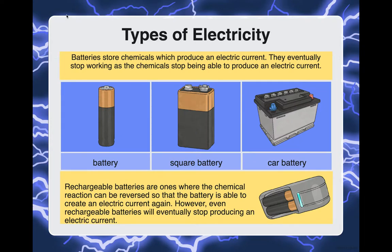Batteries store chemicals which produce an electric current. They eventually stop working as the chemicals can no longer produce the electrical current. Rechargeable batteries are ones where the chemical reaction can be reversed, so the battery is able to create an electrical current again. However, even rechargeable batteries will eventually stop producing electric current. Think of regular batteries such as AA, AAA, and square batteries, as well as car batteries — all of these can die out.